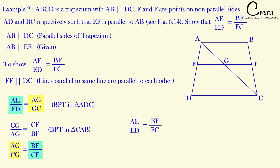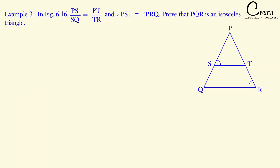Let's move to Example number 3. In figure 6.16, PS upon SQ is equal to PT upon TR, and angle PST is equal to angle PRQ. Prove that triangle PQR is an isosceles triangle. In this question, triangle PQR is given. The ratio PS upon SQ equal to PT upon TR resembles the BPT theorem. Angle PST (angle S) is given as equal to angle PRQ (angle R), and we have to prove that triangle PQR is isosceles.